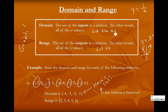A side note to review functions: is this relation a function? Negative 2 goes to 2 — do we see negative 2 again? No. Negative 3 goes to 3 — do we see negative 3 again? Yes — negative 3 gets mapped to 3 and also to 5. So this one is not a function, because negative 3 gets mapped to two different y values. It's allowed to be called a relation, but not a function.